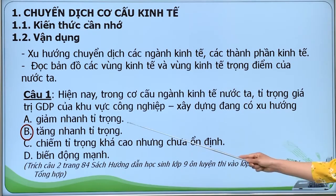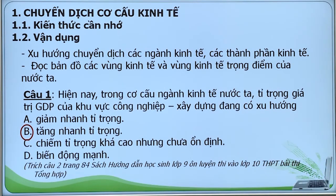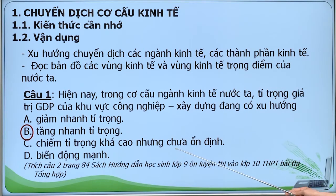Còn phương án A: Giảm nhanh tỉ trọng - đây là đặc điểm của ngành nông lâm ngư nghiệp. Phương án C: Chiếm tỉ trọng khá cao nhưng chưa ổn định - là đặc điểm của ngành dịch vụ.